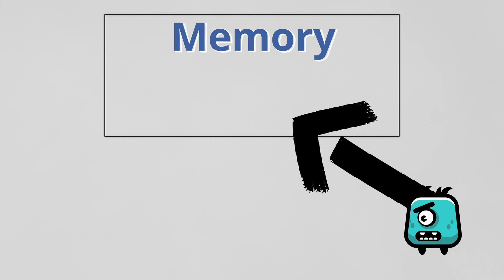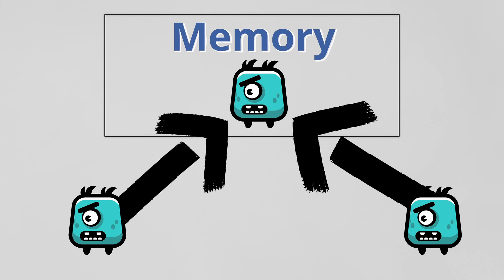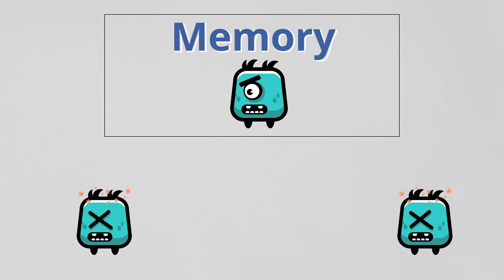So up to now we know: when the resource does not exist in memory, we create it; if it already exists, we use it and don't create a new one. But when should we free that memory? The answer is when it is no longer needed — in this case, when both enemies die. So what we should do is keep track of how many objects in our scene use this resource.